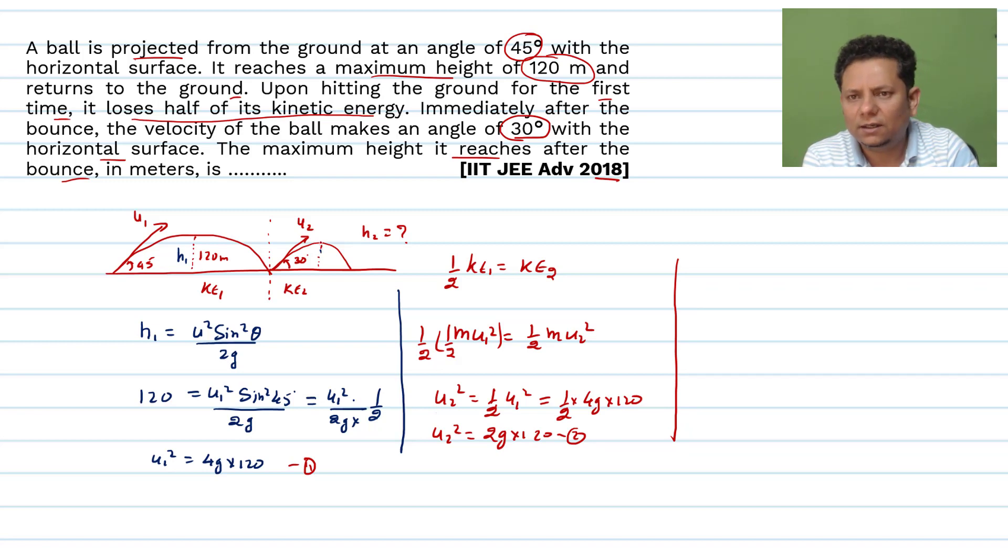Height which is second bound. So again using the same formula, h2 that will be equal to u2 squared sin squared theta 2 divided by 2g. So here is h2 value, u2 squared here is 2g multiplied by 120 multiplied by sin theta.